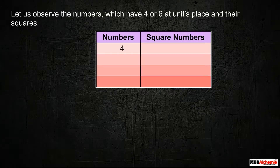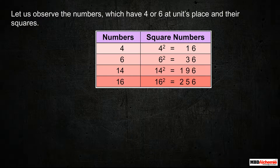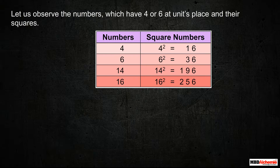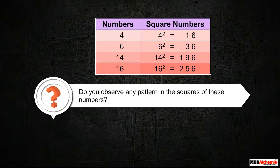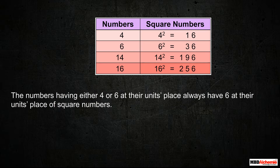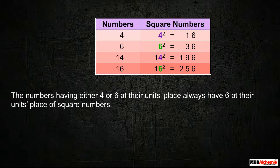Let us observe the numbers which have 4 or 6 at their unit's place and their squares. Do you observe any pattern in squares of these numbers? The numbers having either 4 or 6 at their unit's place always have 6 at their unit's place of the square number.